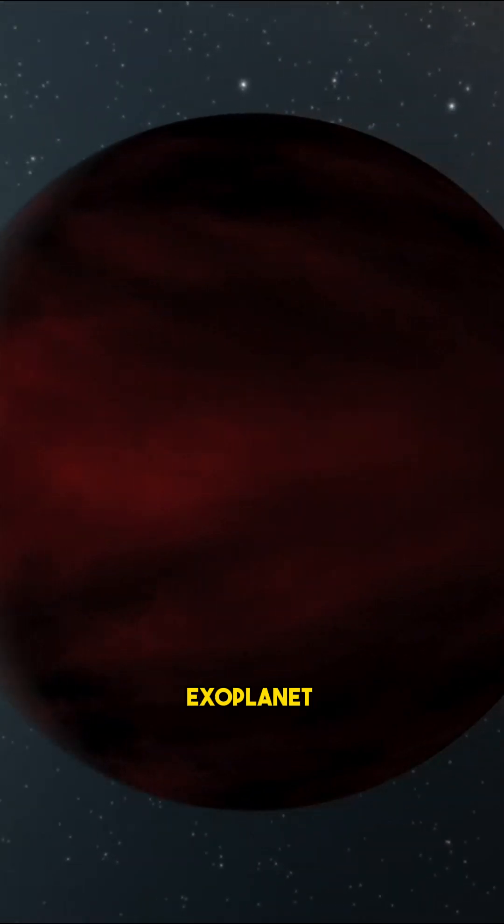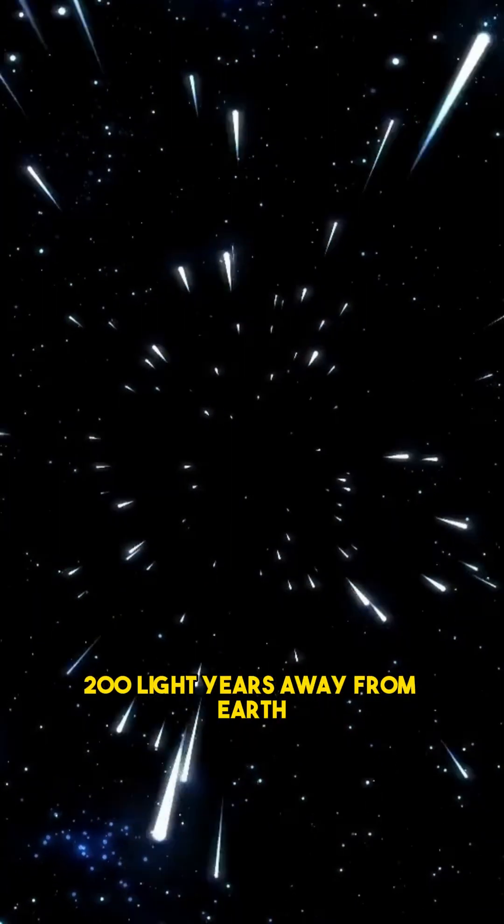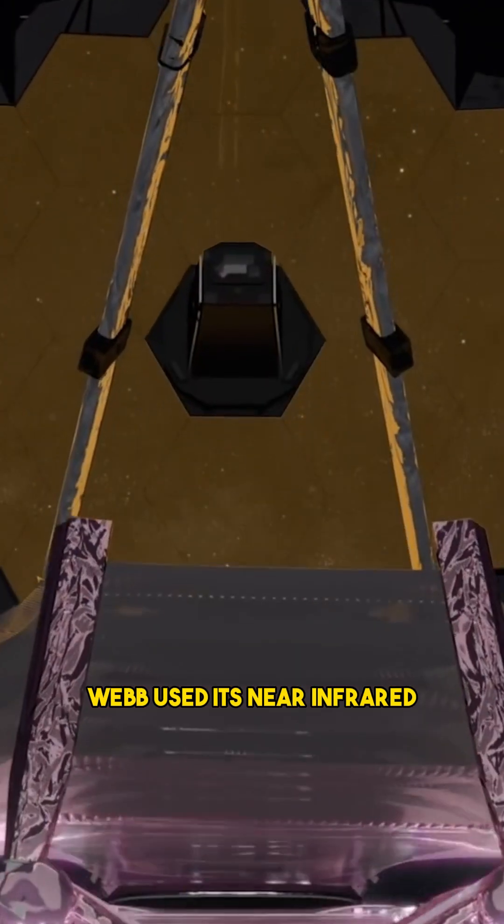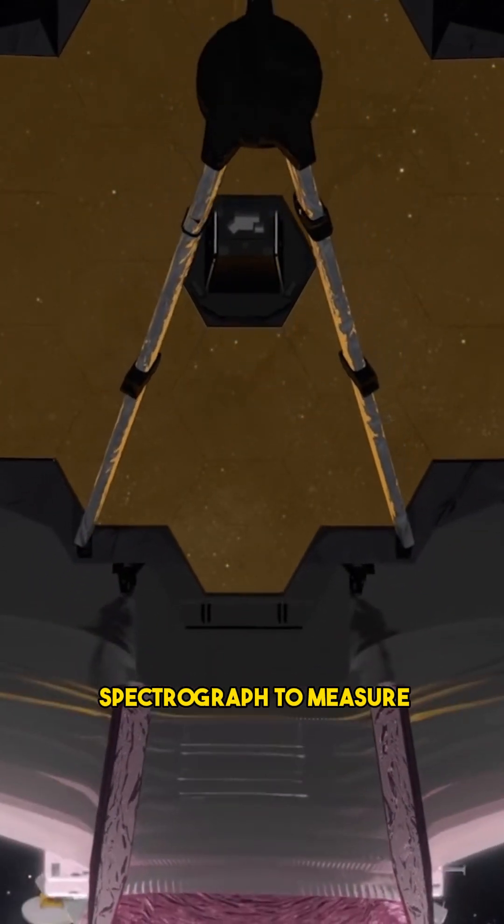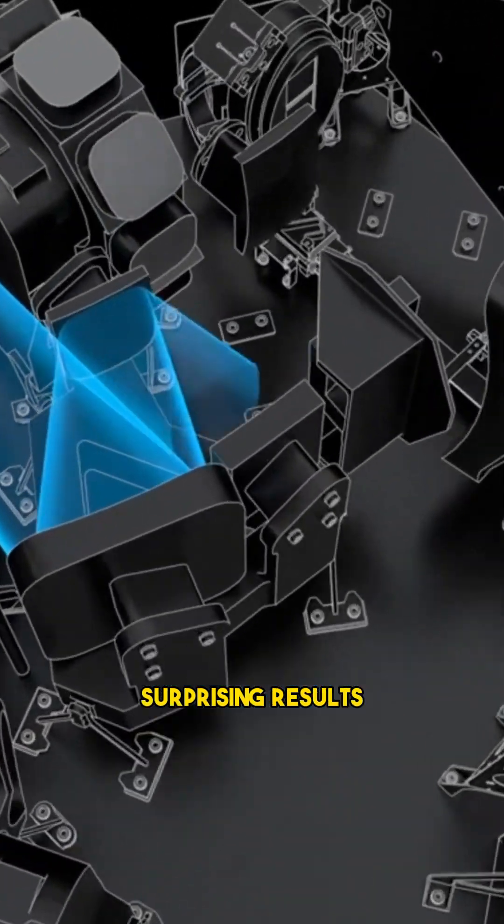It is a hot, Jupiter-like exoplanet that orbits a cool, low-mass star about 200 light-years away from Earth. Webb used its near-infrared spectrograph to measure the spectrum of the planet's atmosphere and temperature, and found some surprising results.